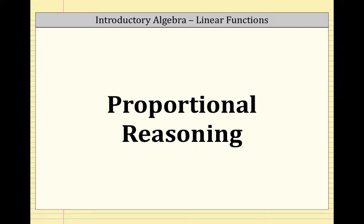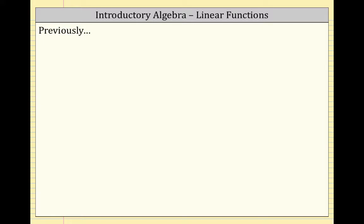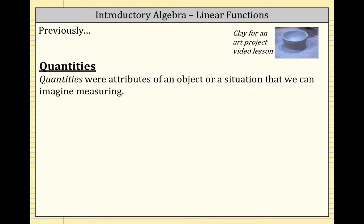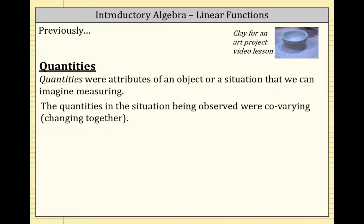Welcome to a second lesson in proportional reasoning. Previously, we had a video lesson on clay for an art project in which we were preserving the ratio of flour to water to make an equivalent mixture. We also talked about quantities, which are attributes of an object or a situation that we could imagine measuring. Quantities in the situation that were being observed were covariant, which means that they were changing together.